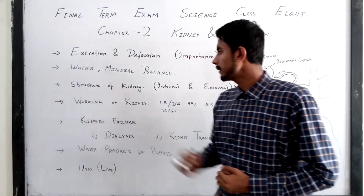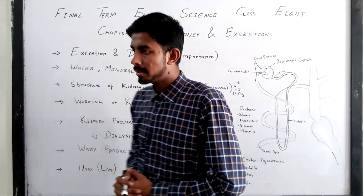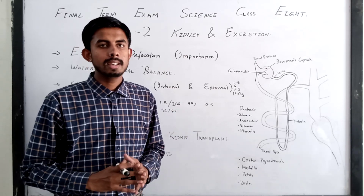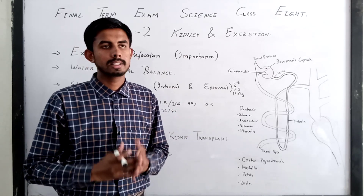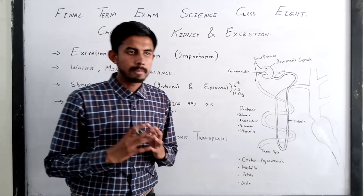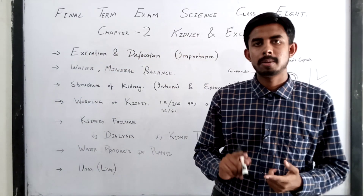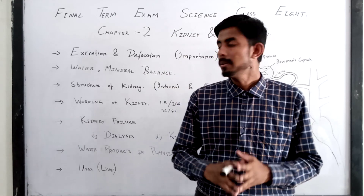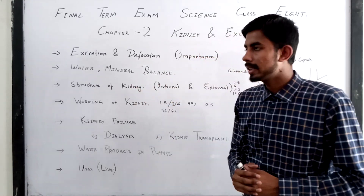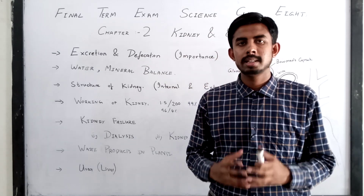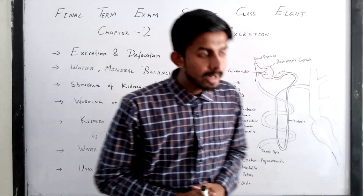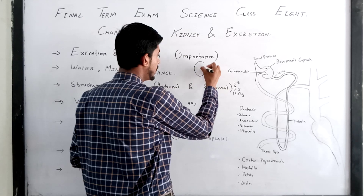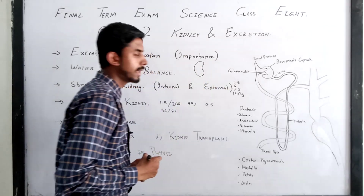Now we will look at the structure of the kidney. The kidney is basically an organ of the excretory system which controls the amount of water in our body, and also controls mineral salts and other substances such as urea and amino acids. The kidney is a bean-shaped organ — if you draw it, it is bean-shaped — and the ureter connects from its center.